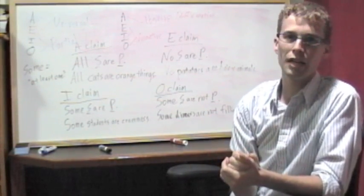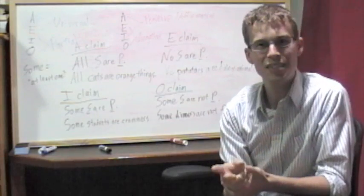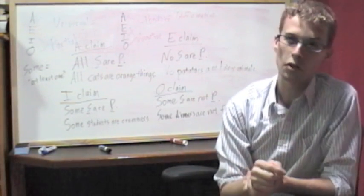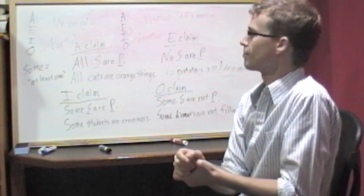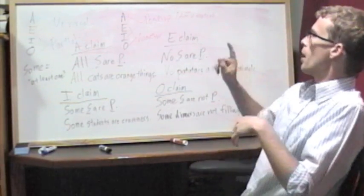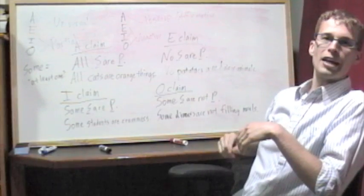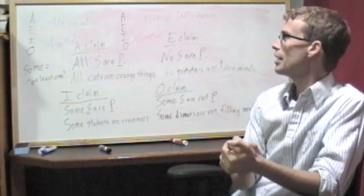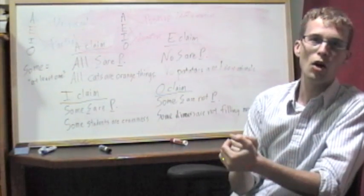So a universal positive claim is an A claim. A universal negative claim is an E claim. Stay on your toes, people. A partial positive claim is an I claim. And a partial negative claim is the trusty old O claim.